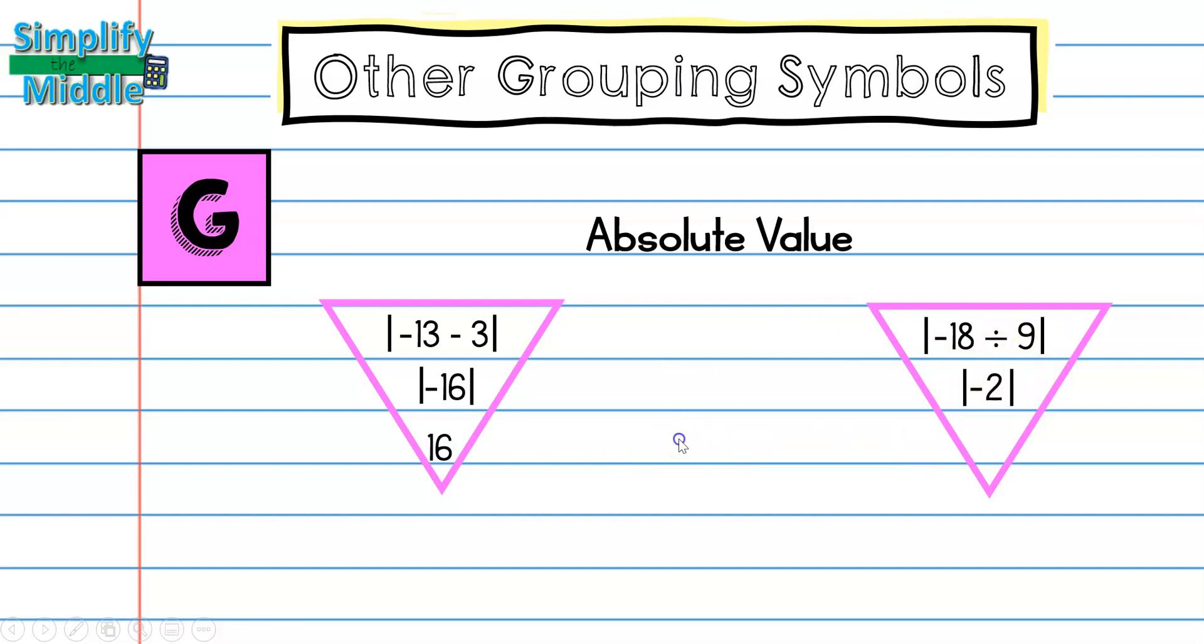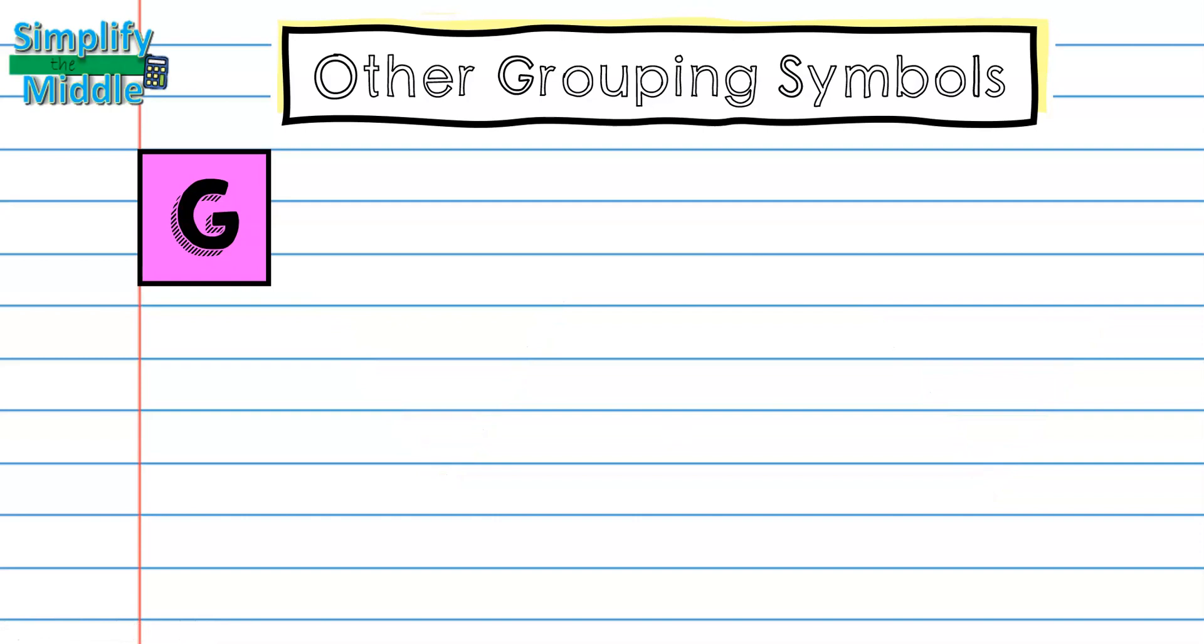The other type of grouping symbol we're going to encounter is division bar, and we can think of this as a fraction. Remember a fraction also means division, and we looked at that in a previous lesson. So let's go ahead and practice with these two problems.